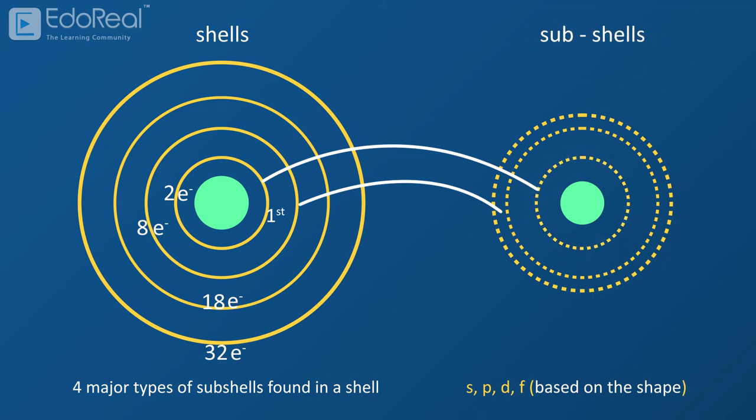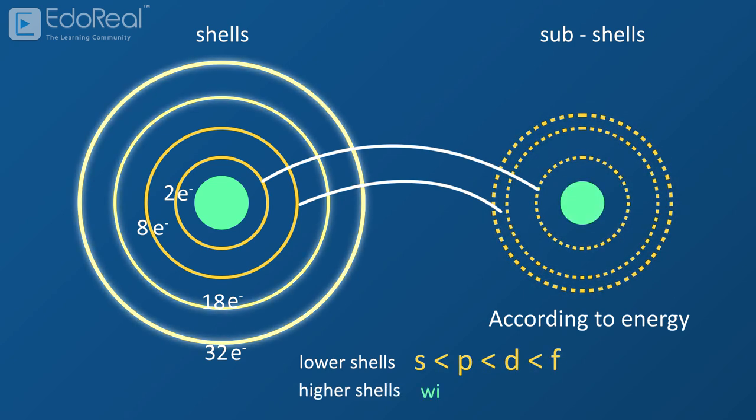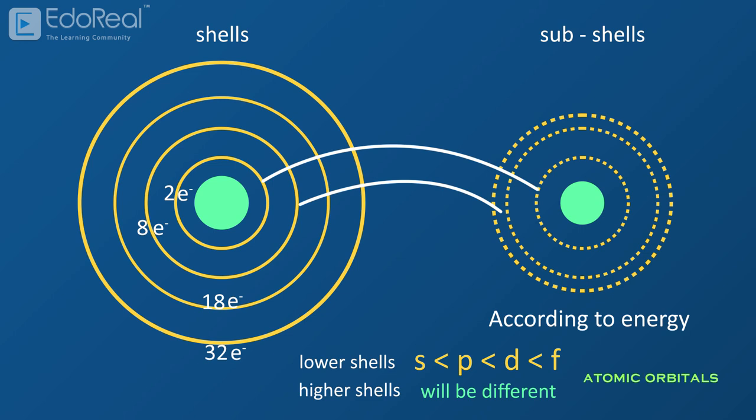These subshells are also arranged according to the energy that they are composed of. At lower shells, the ascending order of the energy of subshells is S, P, D, F. But at higher shells, this order will be different. This order of the energy can be explained in detail while discussing the atomic orbitals.